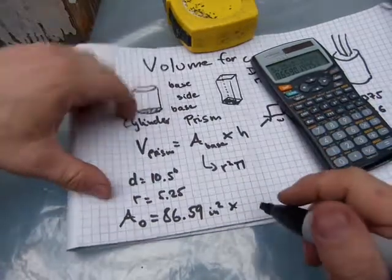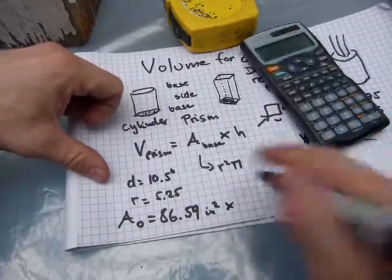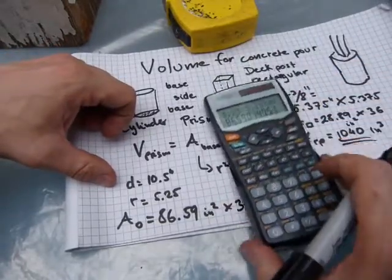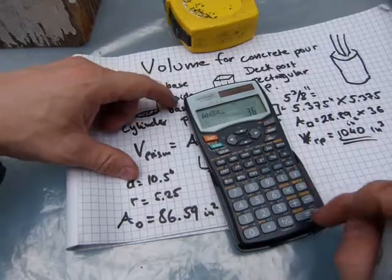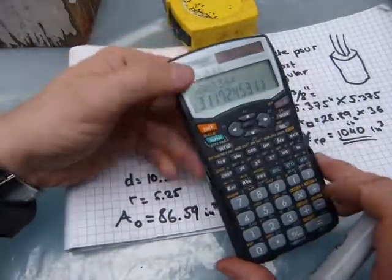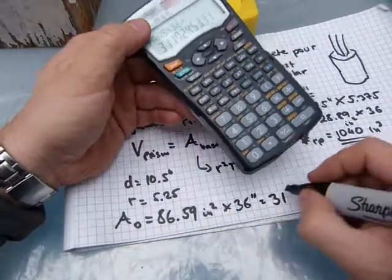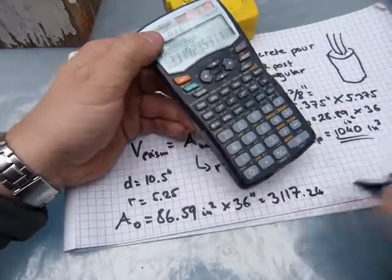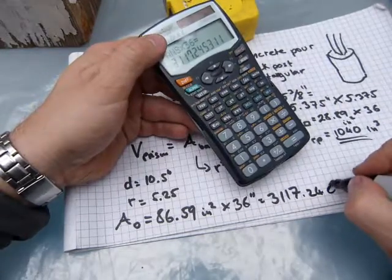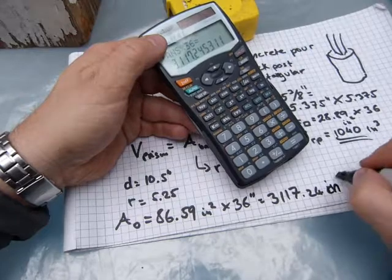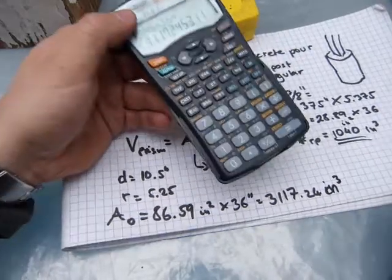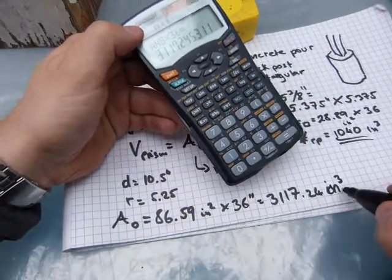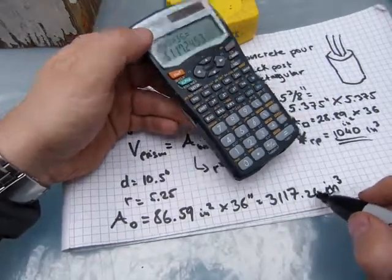We have to multiply the area of the base by the height of the shape, which was also 3 feet — 36 inches. So that gives us 86.59 × 36 = 3,117.24 cubic inches. That's the volume of the cylinder — about 3,117 cubic inches. The 0.24 is about a teaspoon of concrete, so don't worry about it too much.